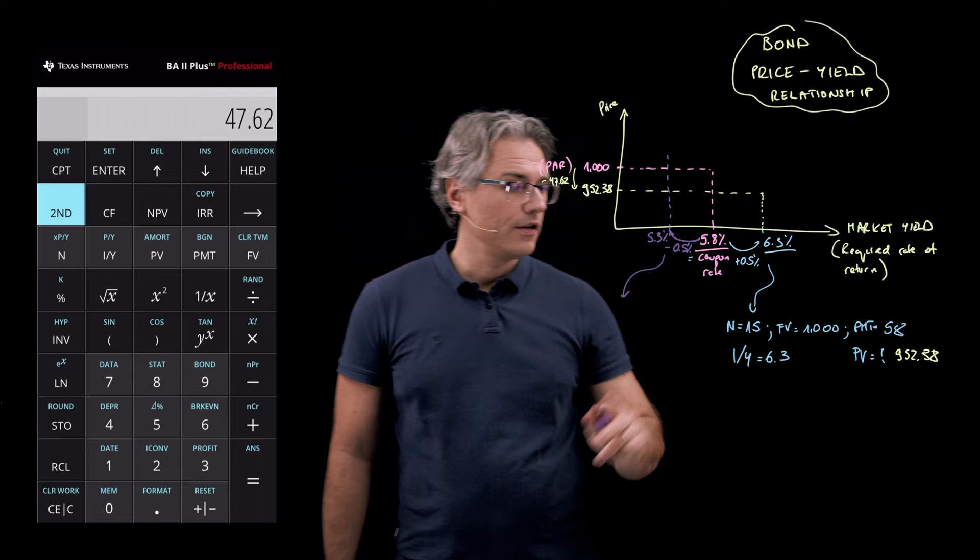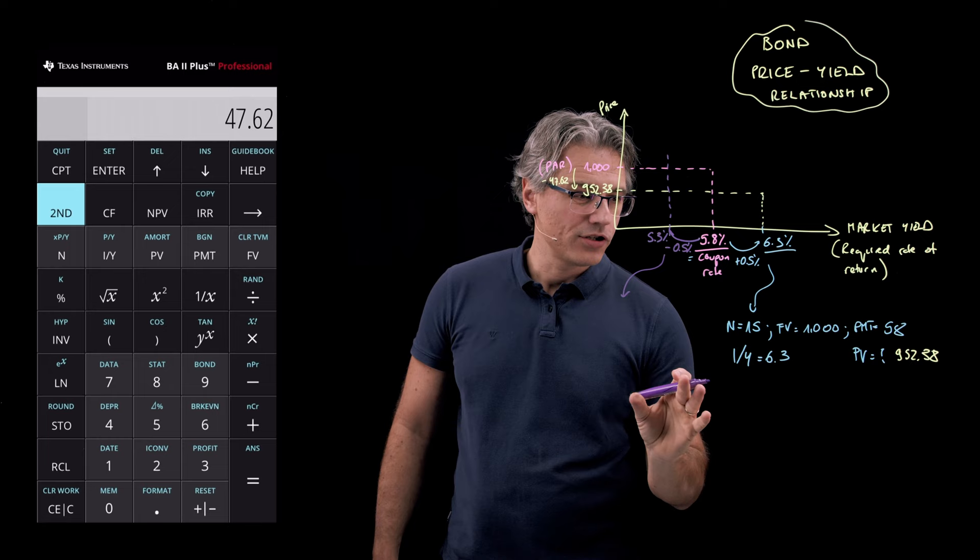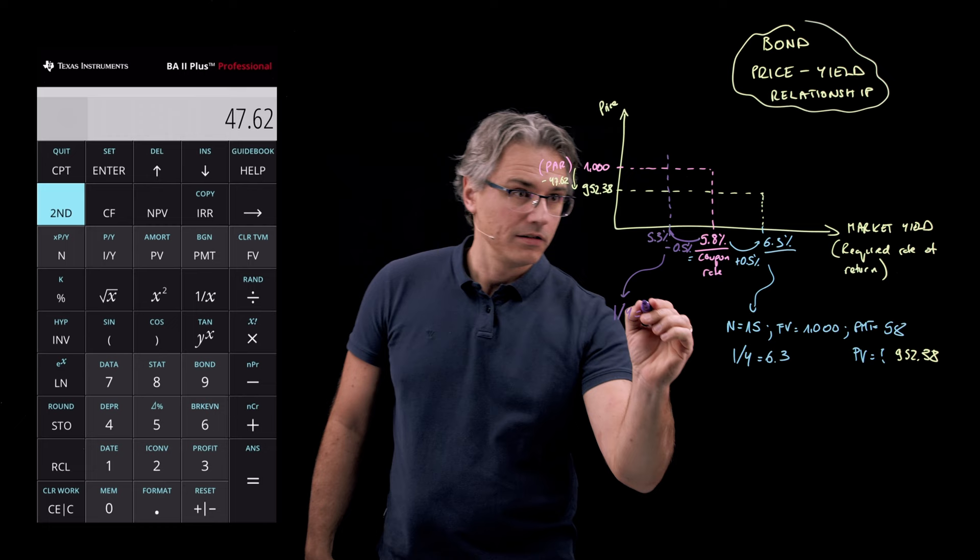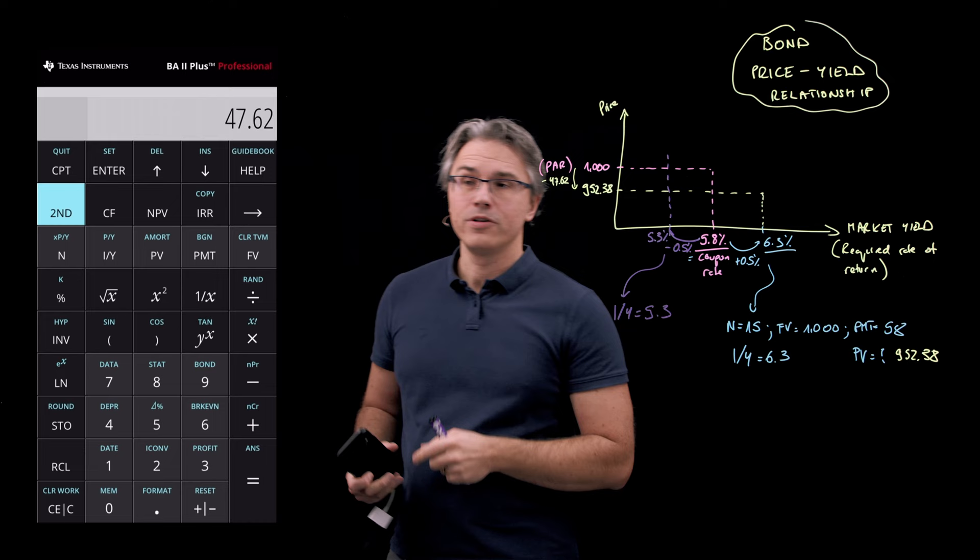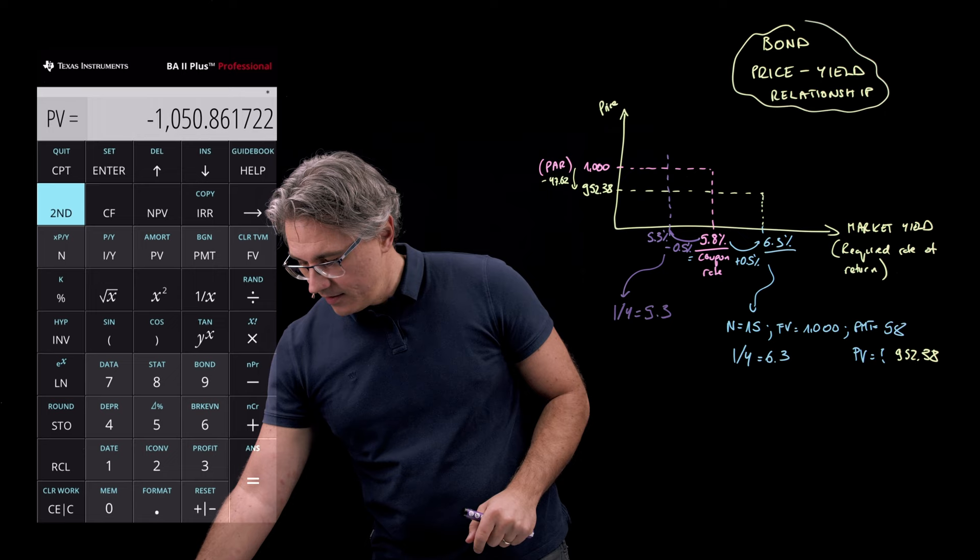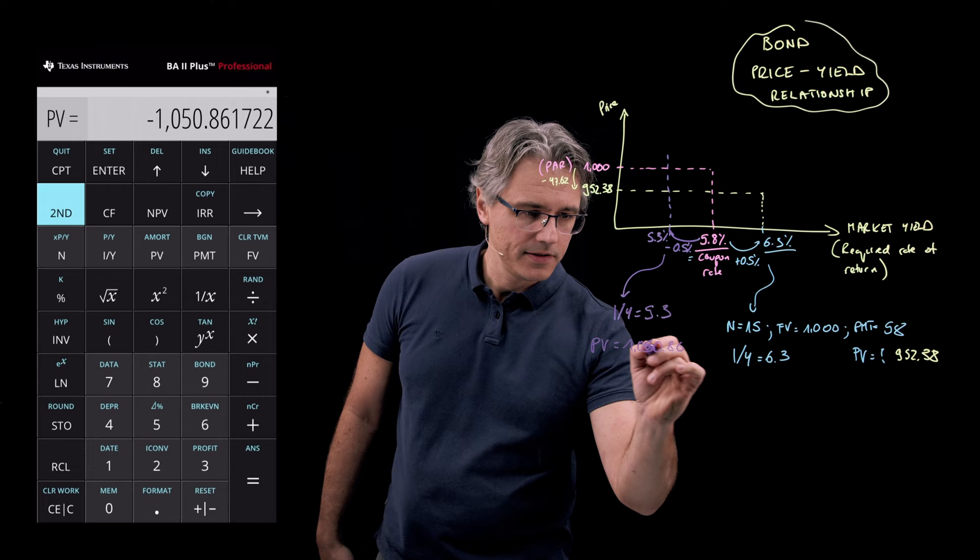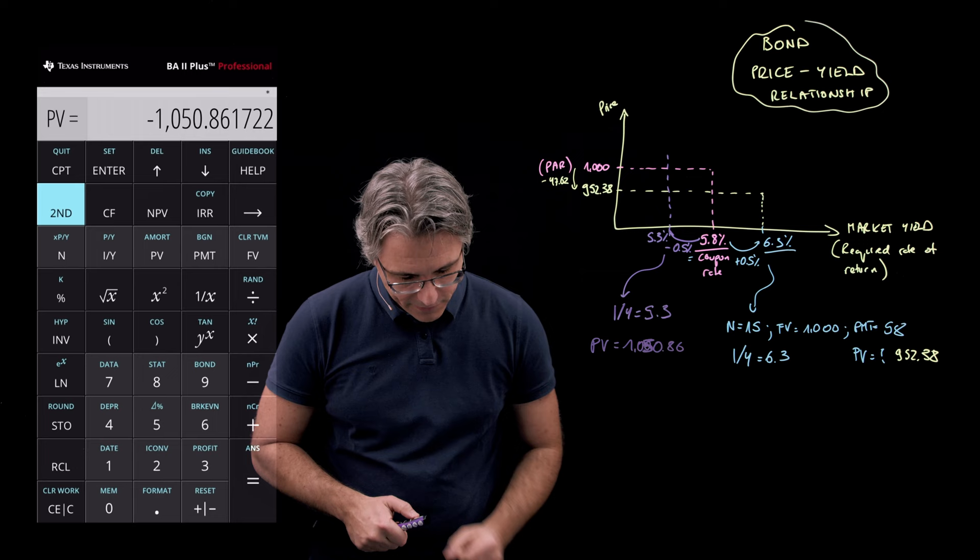Well, over here, the only thing I need to change on my calculator, because I've got everything set up already, the only thing I'd need to change is the I over Y parameter and make this 5.3 instead of 6.3. Because I've got the numbers stored in my time value of money worksheet, I haven't cleared it. I'm just going to say 5.3 followed by I over Y and recompute the PV. Okay. As you can see, the PV this time is 1,050.86. 1,050.86. This is a 5 over here. I'm sorry for making this a bit messy. 1,050.86, which I'm going to draw over here.